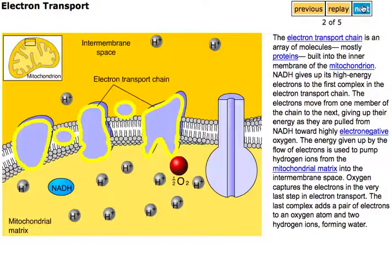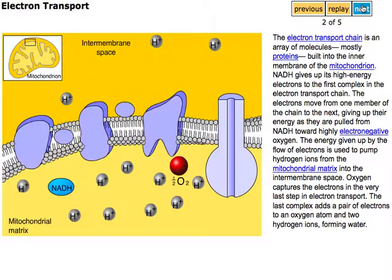The electron transport chain is an array of molecules, mostly proteins, built into the inner membrane of the mitochondria.